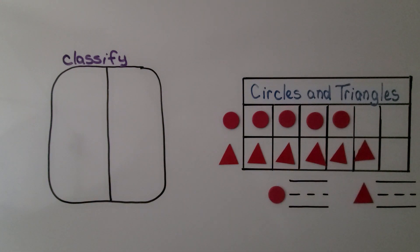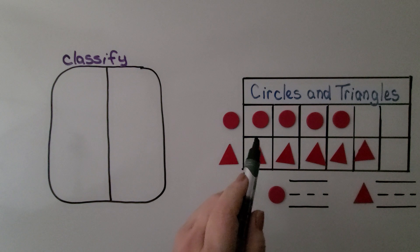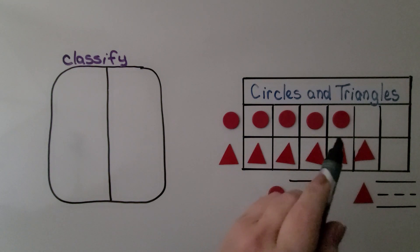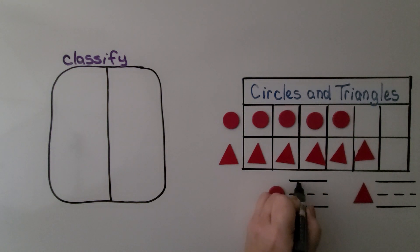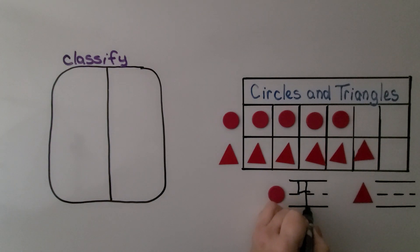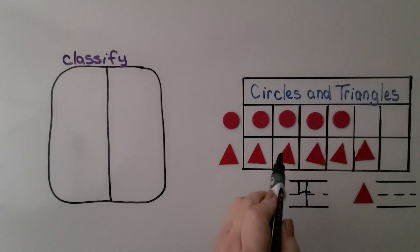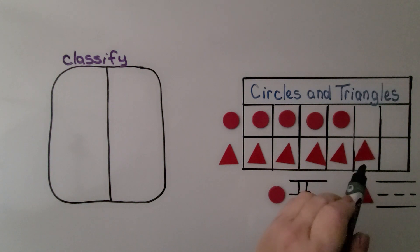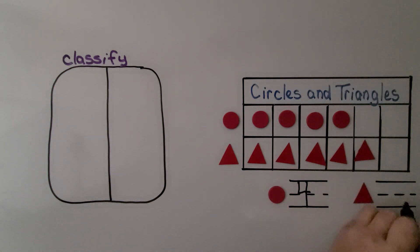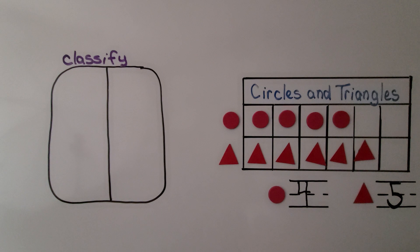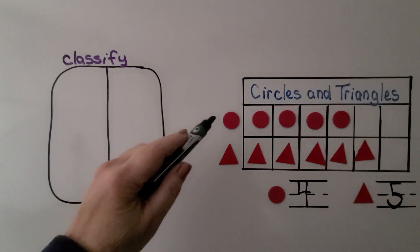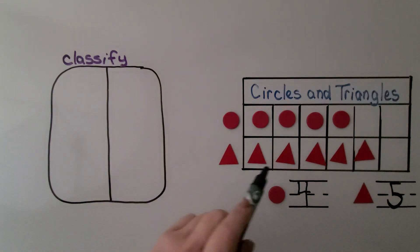We can count them and write how many. There are one, two, three, four circles. And there are one, two, three, four, five triangles. We did not count the picture labels — we only counted what were in the boxes.